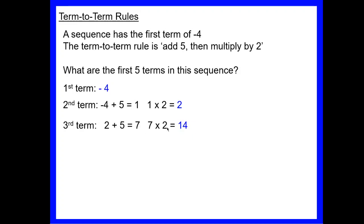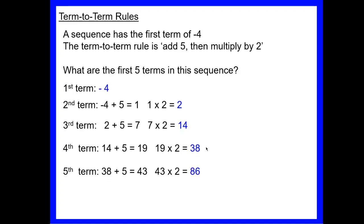Continuing: take 2, add 5 to get 7, times by 2 to get 14. Take 14, add 5 to get 19, times by 2 to get 38. Take 38, add 5 to get 43, times by 2 to get 86. The first five terms are −4, 2, 14, 38, and 86. Be careful — we're not using BIDMAS here; we follow the rule steps in the stated order.